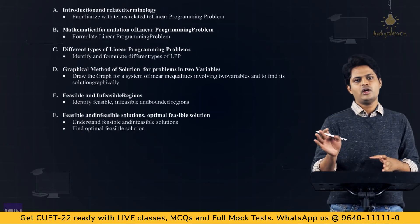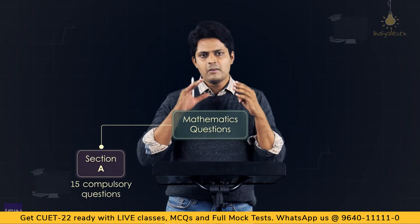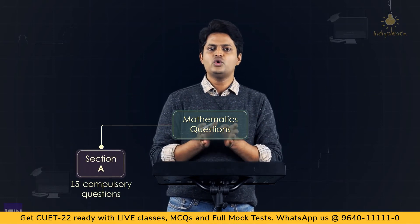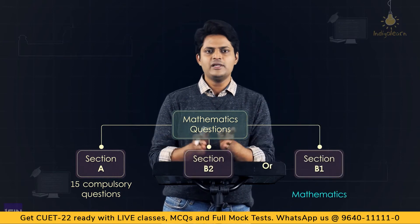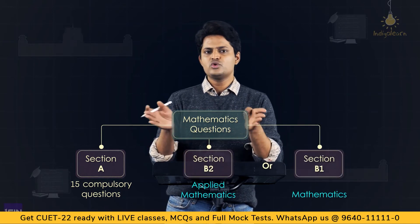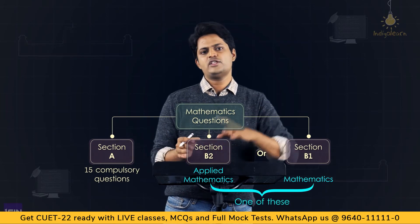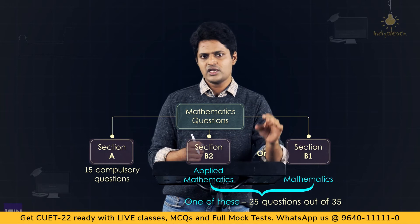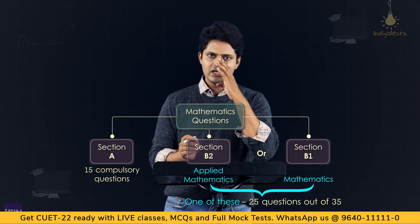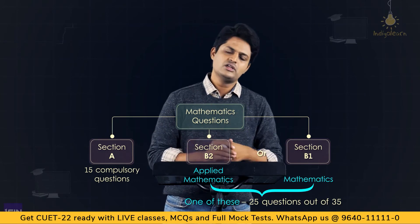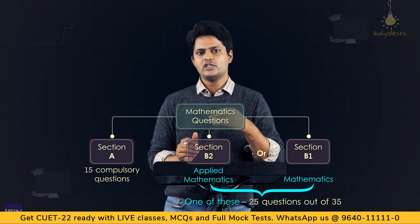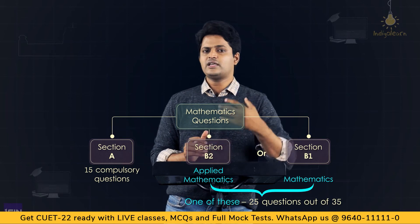To summarize: Section A has 15 compulsory questions. Section B is split into B1 (pure maths) and B2 (applied maths); you choose one. Each has 35 questions with 25 to be attempted, so you attempt a total of 40 questions — 15 from Section A plus 25 from either B1 or B2.